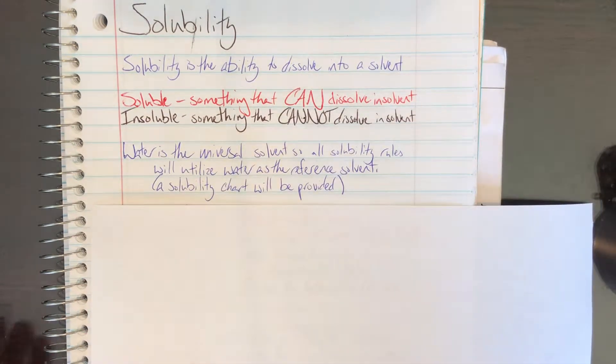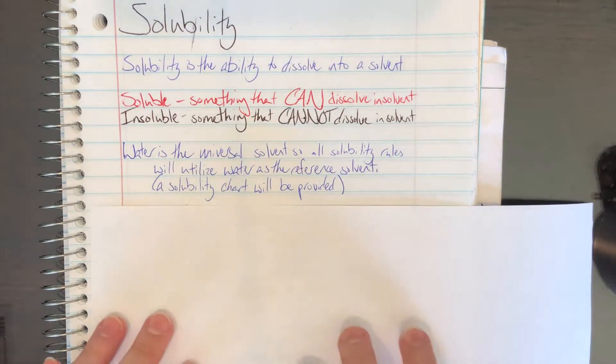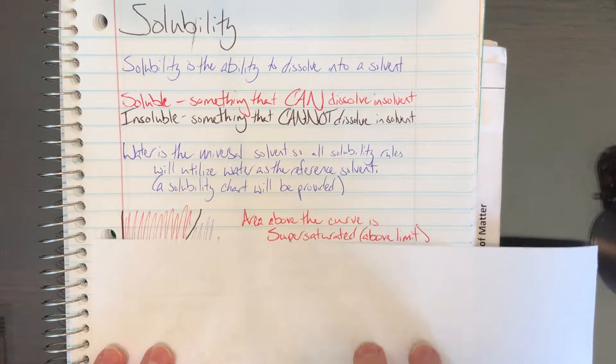Water is our universal solvent. It's generally what we're talking about whenever we discuss solubility. It's what we normally make all our solutions out of, and anytime we talk about solubility rules, we're generally talking about water being the solvent. In your solubility chart, that will be the solvent that compounds are being dissolved into, and you'll be provided a solubility chart.